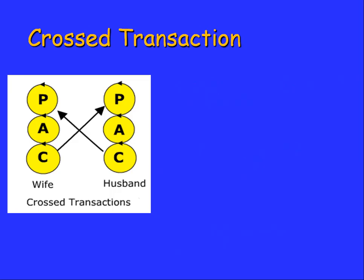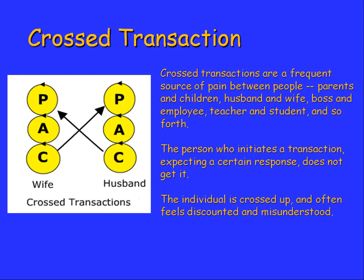Sometimes we get cross-transactions, which are a frequent source of pain between people — parents and children, husbands, wives, bosses, employees, teachers, students, and so forth. A person initiates a transaction expecting a certain response but doesn't get it, and often feels discounted. For example, if the wife says she's feeling very vulnerable after the loss of her friend, and the husband responds in a childlike way — 'I'm hurt too, I've lost people as well' — that's a cross-transaction, likely ending with the wife saying 'it's all about you, isn't it? Every time I want to speak about my feelings, it's all about you.'